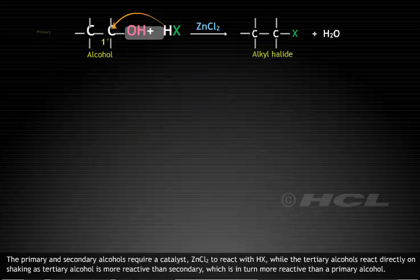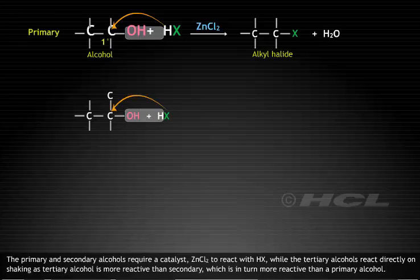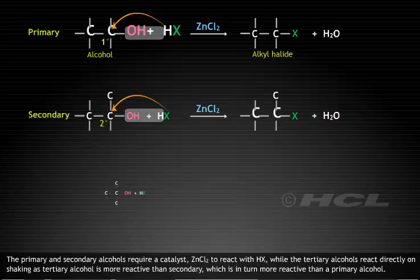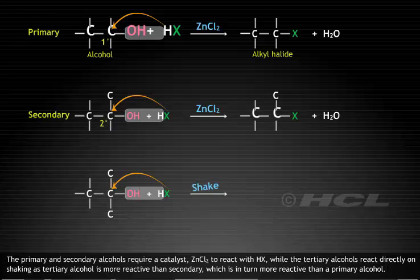The primary and secondary alcohols require a catalyst, ZnCl2, to react with HX. While the tertiary alcohols react directly on shaking, as tertiary alcohol is more reactive than secondary, which is in turn more reactive than a primary alcohol.